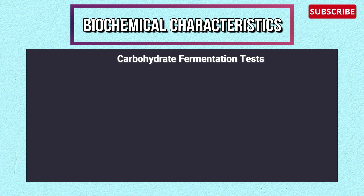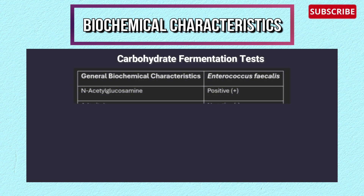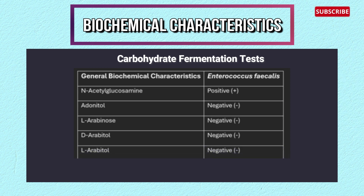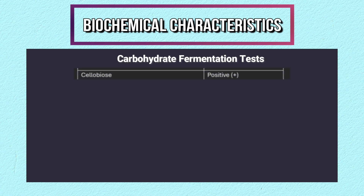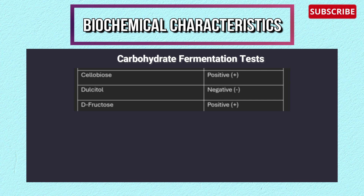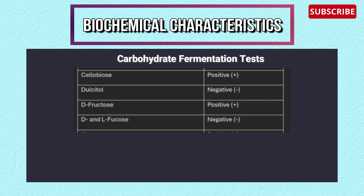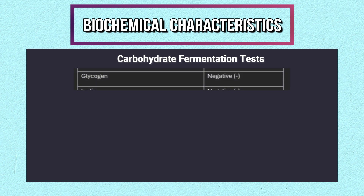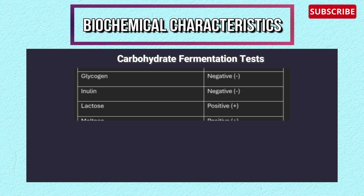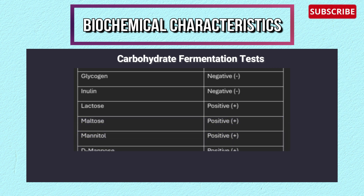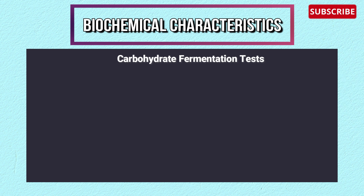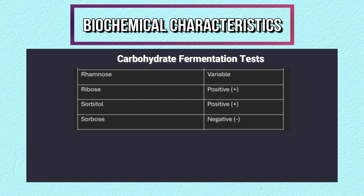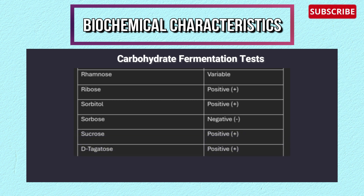Additional biochemical results: PYR (pyrrolidonyl arylamidase) test positive, Quellung test positive, spore negative, growth at 4°C negative, growth at 10°C positive, growth at 40°C positive. Carbohydrate fermentation tests: N-acetylglucosamine positive, dulcitol negative, D-fructose positive, galactose positive, D-glucose positive, glycerol positive, lactose positive, maltose positive, mannitol positive, ribose positive, sorbitol positive, sucrose positive, D-tagatose positive, trehalose positive; adonitol, L-arabinose, D-arabitol, glycogen, inulin, and tartrate are negative.